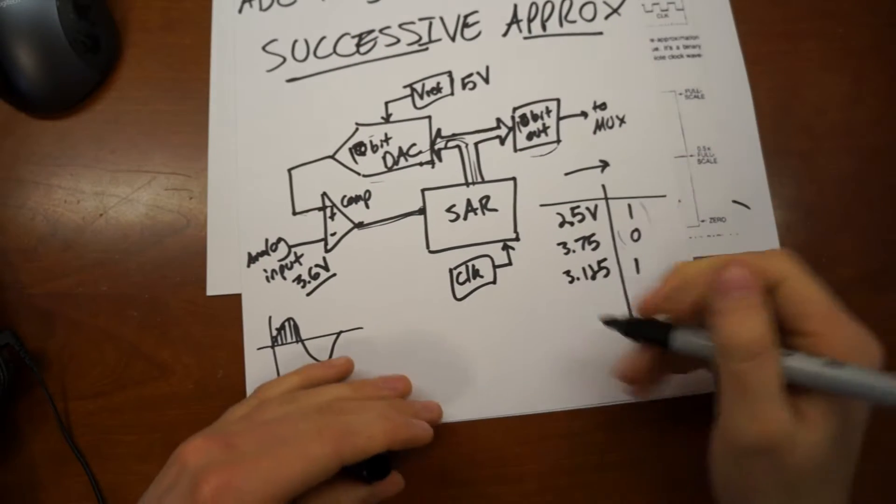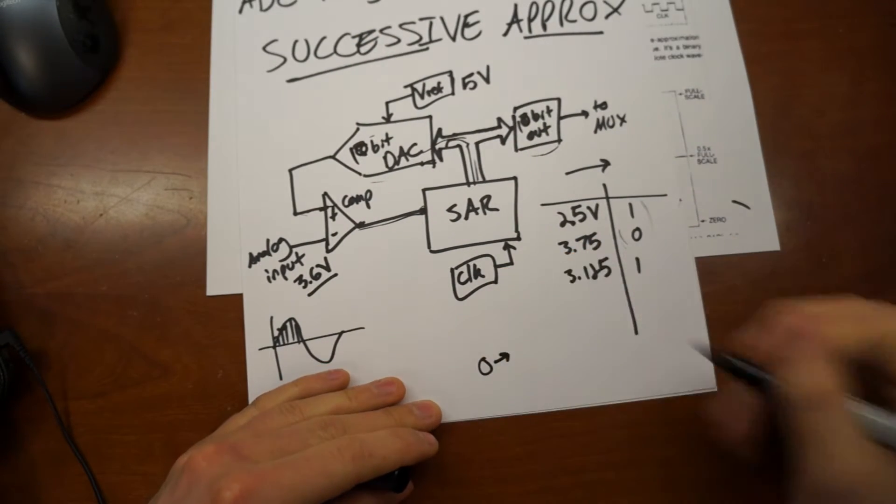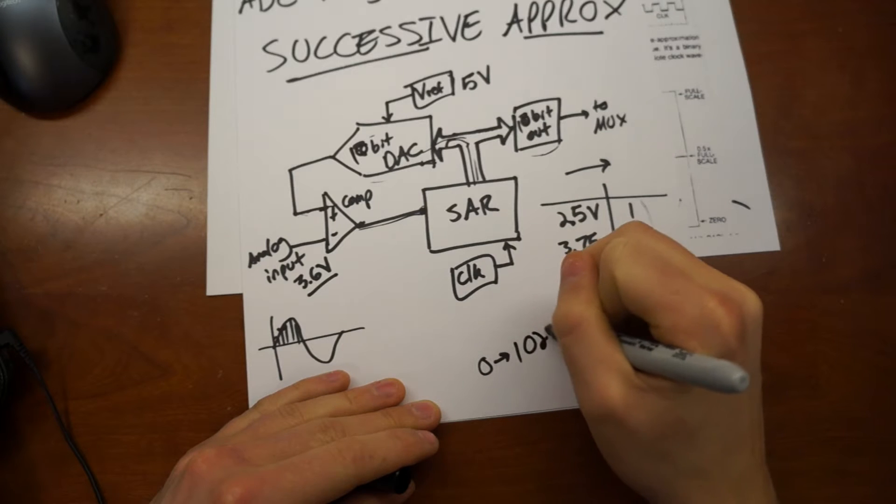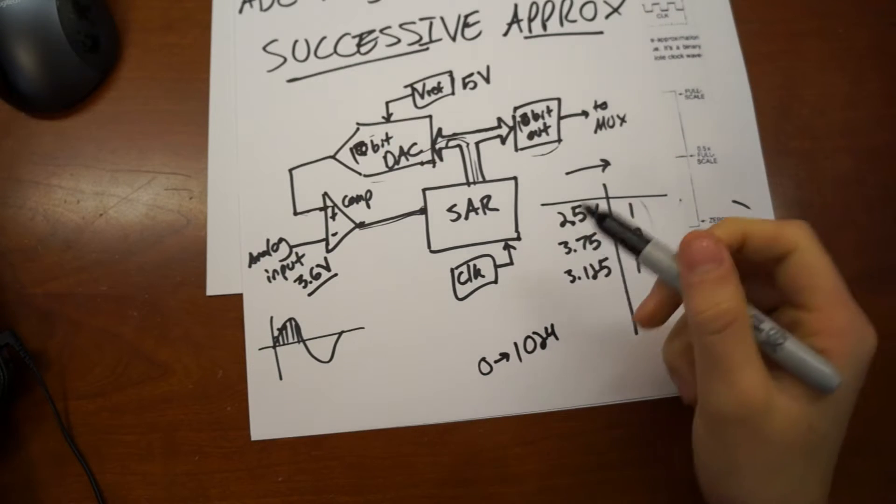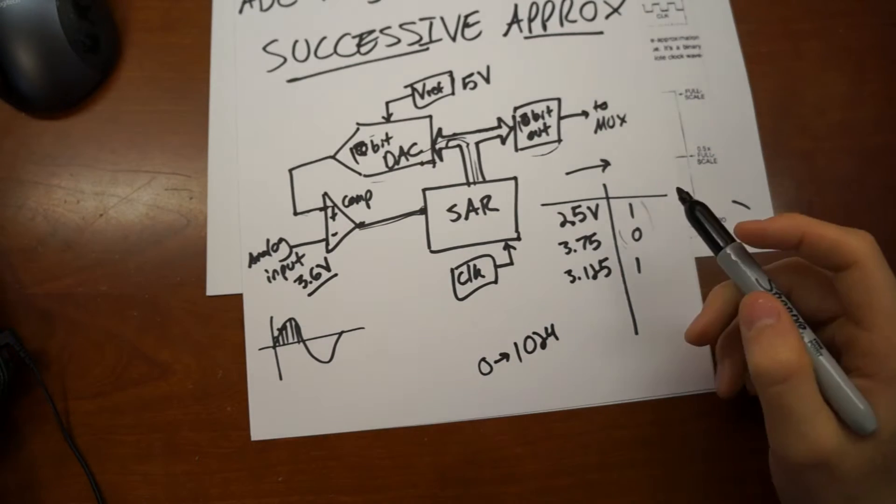And I think it's a 10-bit DAC as well, which is why, if you've ever played around with Arduino, your analog input values are 0 to 1024, because 2 to the 10th is 1024. So in any case.